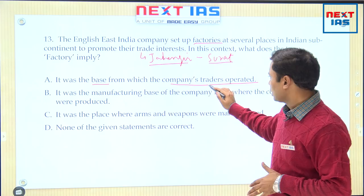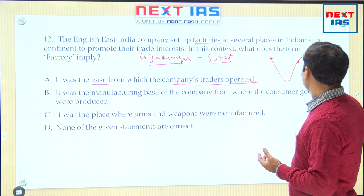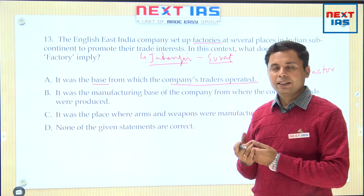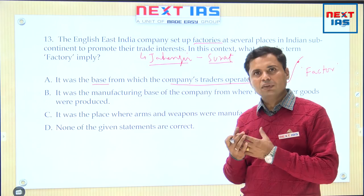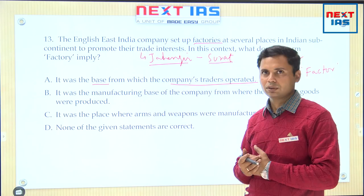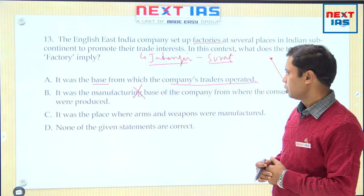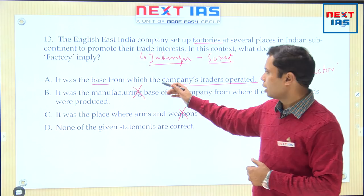This word 'factory' came from the word 'factor' — the low-paid employees of the East India Company, essentially clerks who maintained accounts of goods stored there, were designated as 'factors.' So it was basically the office of the factors, which is why these places are called factories. It was not a manufacturing base, not a place for arms and weapons — so the answer is A.